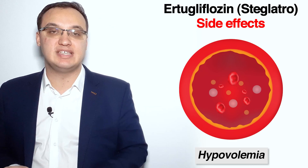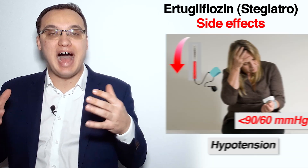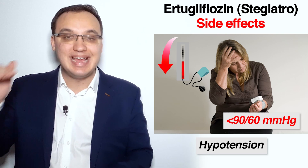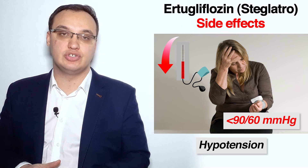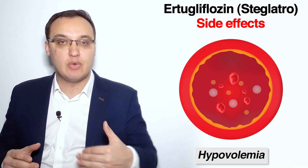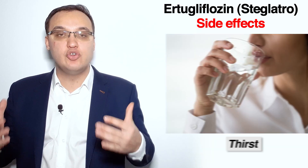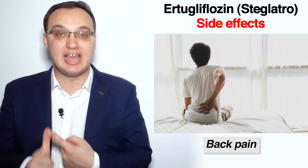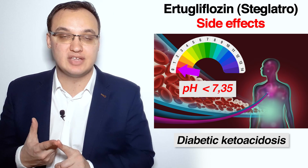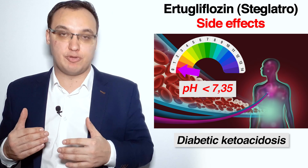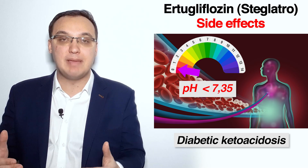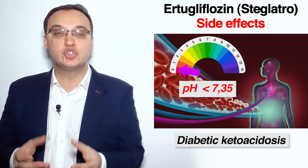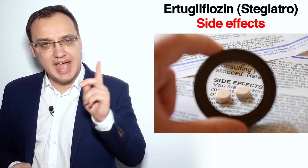Hypovolemia can also be seen, which leads to hypotension — a blood pressure of less than 90 systolic over 60 diastolic. Due to the hypovolemia, meaning less water in the blood, patients usually become thirsty. Two other side effects are back pain and diabetic ketoacidosis, which is a blood pH of less than 7.35 caused by increased ketone body production from the liver in diabetes.